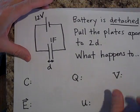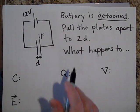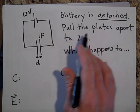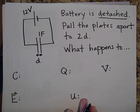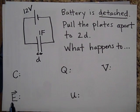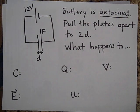Alright, so this time we're going to detach the battery from the capacitor. So the battery is detached. We're going to pull the plates apart to 2D. What happens to all these quantities again? What's going to happen to C, Q, V, E, and U? Go ahead and pause and try it.